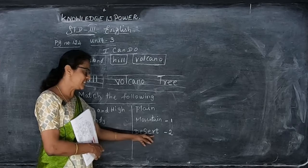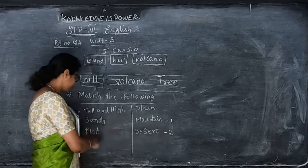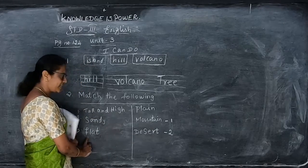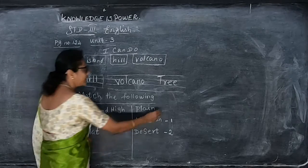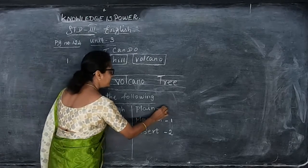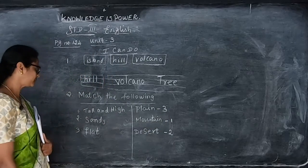D-E-S-E-R-T is the desert. Then flat — F-L-A-T. The answer is plain — P-L-A-I-N. So match the following: tall and high goes with mountain, sandy goes with desert, and flat goes with plain.